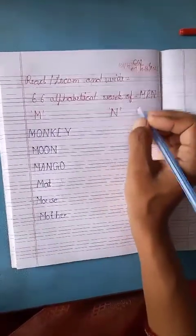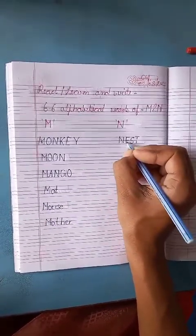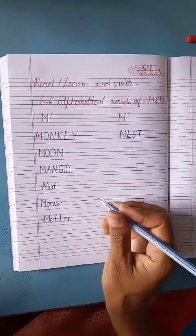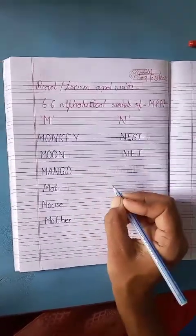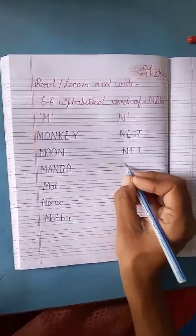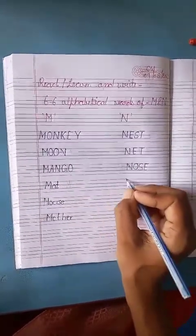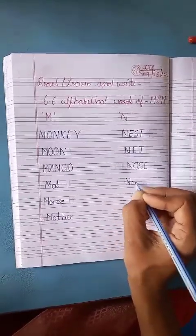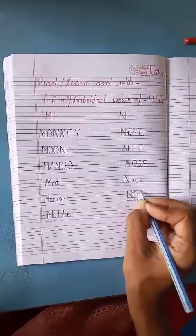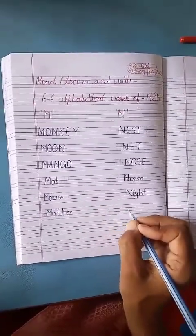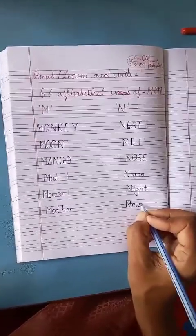Alphabetical words of N: N-E-S-T, Nest. N-E-T, Net. N-O-S-E, Nose. N-U-R-S-E, Nurse. N-I-G-H-T, Night. N-E-W-S-P-A-P-E-R, Newspaper.